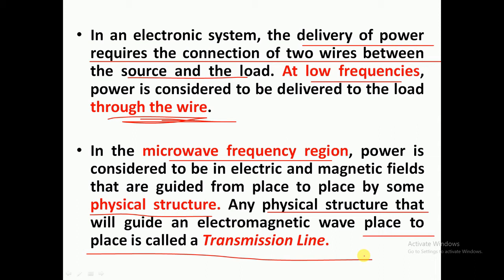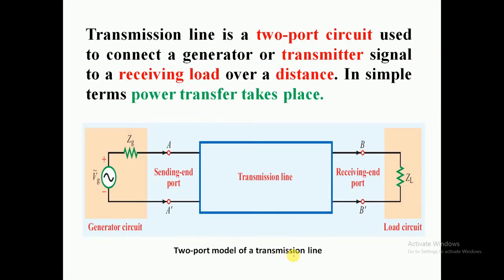For lower frequencies we use a wire, whereas for higher microwave frequencies we use a physical structure — that physical structure is the transmission line. As I mentioned, the transmission line is a two-port circuit element. In this figure, the source is sinusoidal in nature, ZG is the source impedance, and ZL is the load impedance — a similar setup to how we study two-port networks.